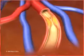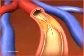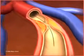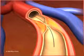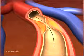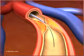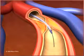A thin, flexible metal wire is then advanced through this tube and past the site of blockage in the artery. A second, smaller catheter is then inserted over the wire and threaded to the same artery.